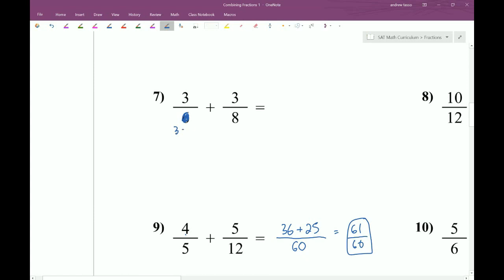This can be reduced to 3 times 2. This can be reduced to 2 times 4. And then you can see that they actually have a 2 in common. So what we would do here is we would fill in what's missing. The list here involves a 3 and a 2, and then a 2 and a 4. So what's missing on this side is a 4. And what's missing on this side is a 3. But we have to put that on top and bottom.